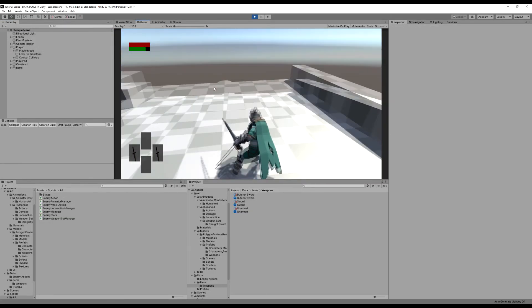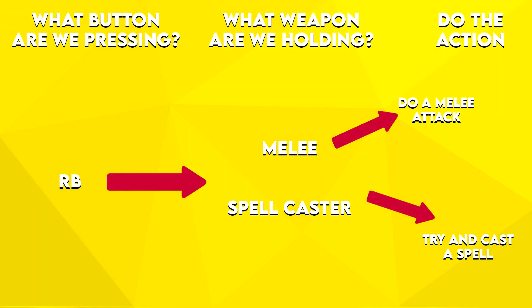Back in game, we can swing our sword again — yes, we can. Let me give you a visual representation of what's going on. First: what button are we pressing? This happens in the input handler — RB. From there we decide what action to do based on the RB input. What weapon are we holding? If it's a melee weapon, do a light attack. If it's a spell caster — are we holding a faith caster? Yes — so we try to cast a faith spell. We'll further expand this in the next episode and actually create a healing spell with effects and the whole deal.